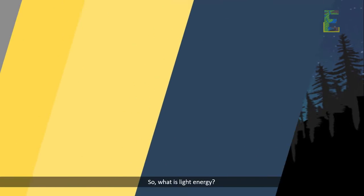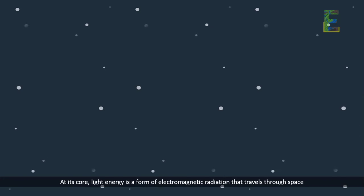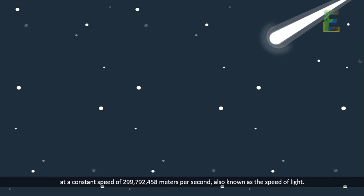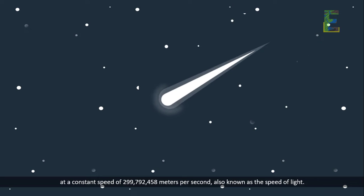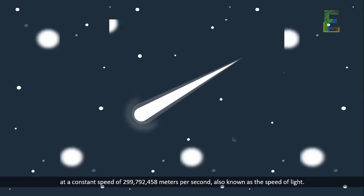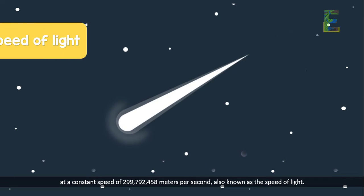So, what is light energy? At its core, light energy is a form of electromagnetic radiation that travels through space at a constant speed of 299,792,458 meters per second, also known as the speed of light.